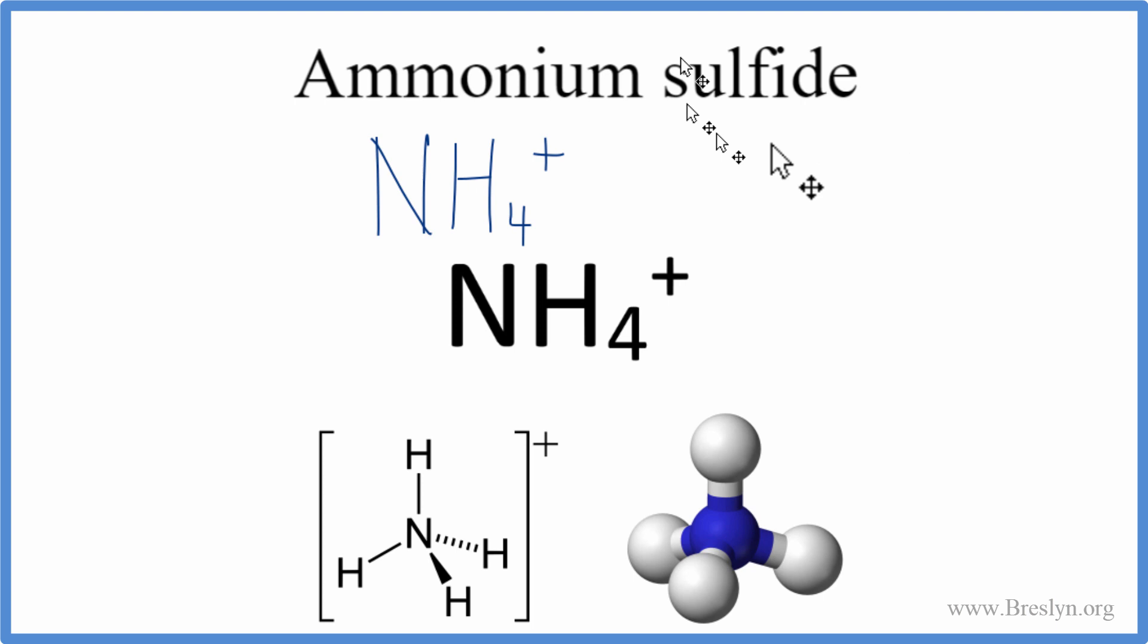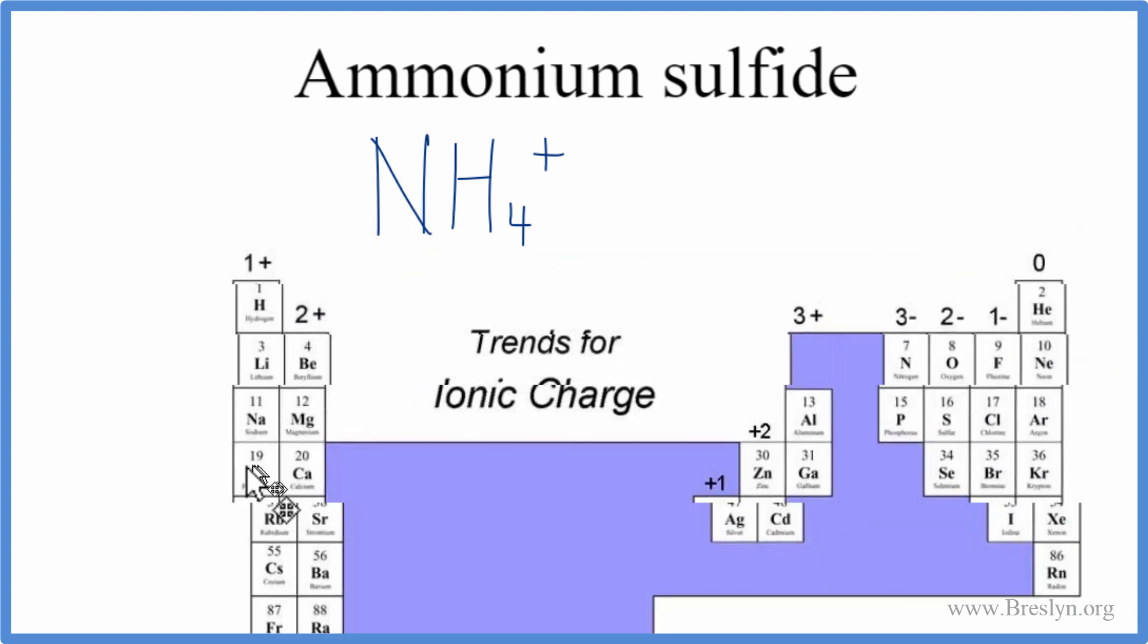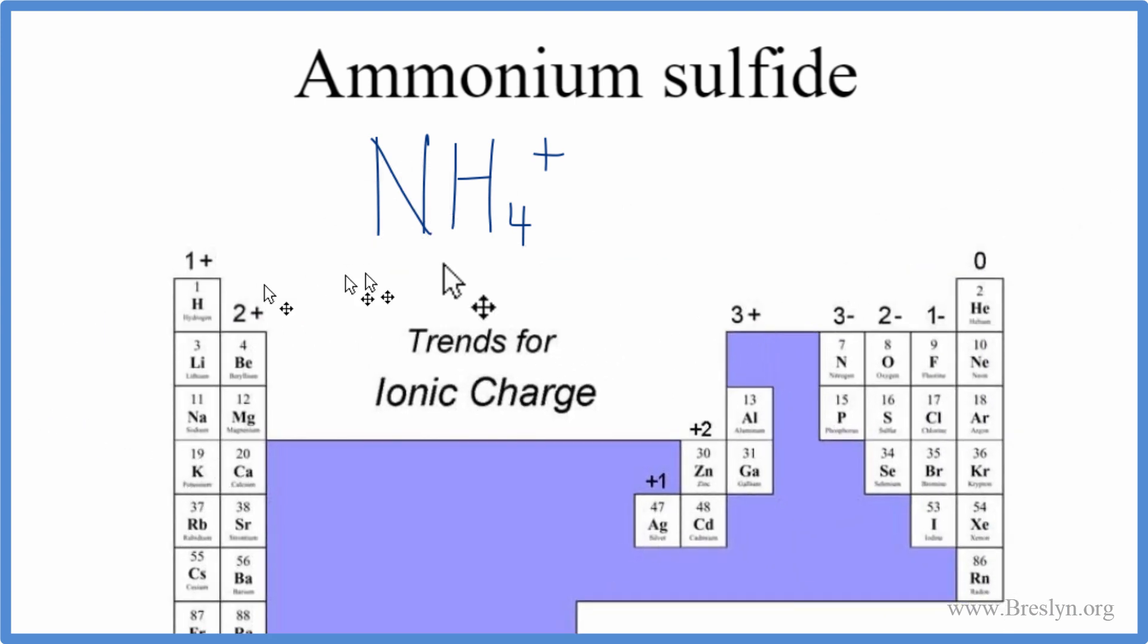And next we need to write the sulfide ion. That's from sulfur on the periodic table. So let's take a look at the periodic table here. And sulfur is in group 16, sometimes called 6A. It's right here below oxygen. It has a 2 minus charge. So sulfur will be 2 minus.